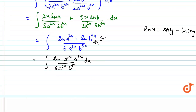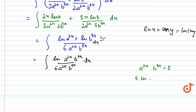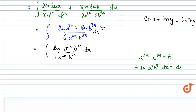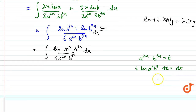Now let t = a^(2x)·b^(3x). Then log(a^2)·b^(3x) + b^(3x)·b gives dt. So we substitute and replace accordingly.